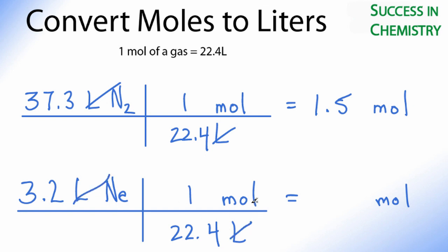See that our liters cancel out. We're going to be left with moles. 3.2 times 1, divide that by 22.4, and we end up with 0.1 moles.